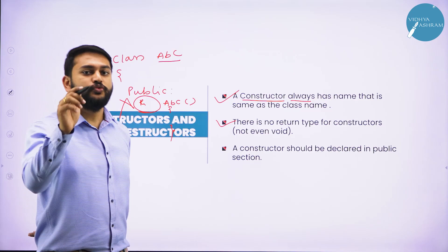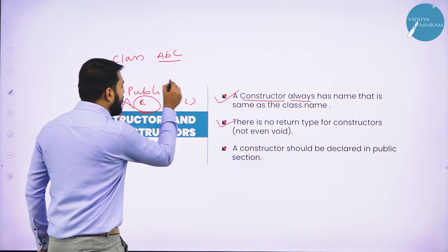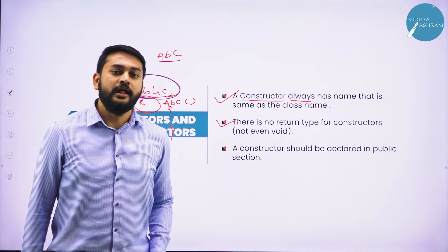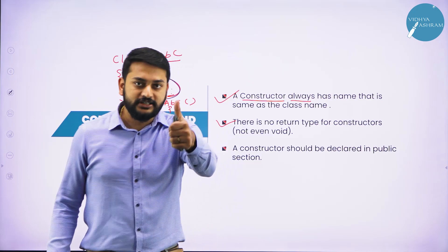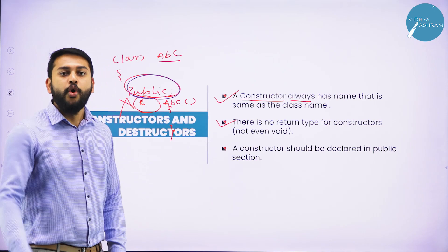The third point: make sure you declare the constructor under the scope of public. Your constructor should always be under the scope of public — you cannot declare it under private or protected. So three points: constructor name should be same as class name; it should not have any return type; and it should always be declared under the scope of public.